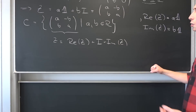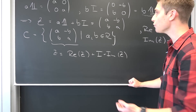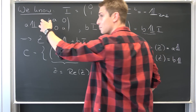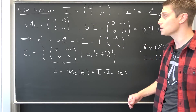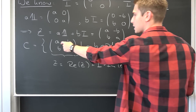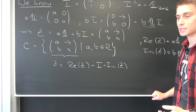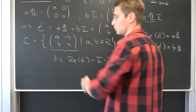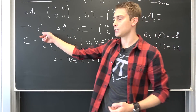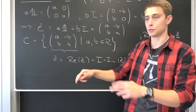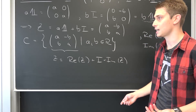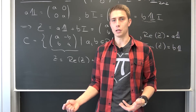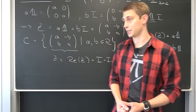Two more side notes: a complex number is exactly zero if and only if a and B are zero — if we plug zero in, that's just the zero matrix, the null matrix, so a and B must be equal to zero. Also, two complex numbers are exactly equal if and only if their entries are equal. If we compare complex number Z1 with Z2, then we must have a equal to C and B equal to D. This stems from the fact that two matrices are exactly equal if and only if their dimensions are equal and their entries are equal.